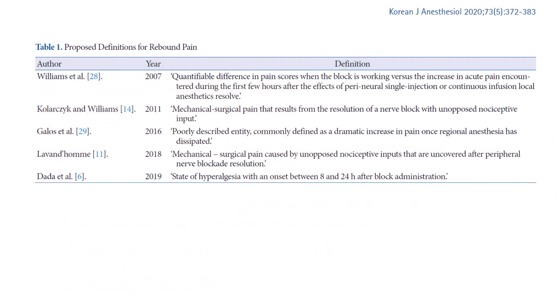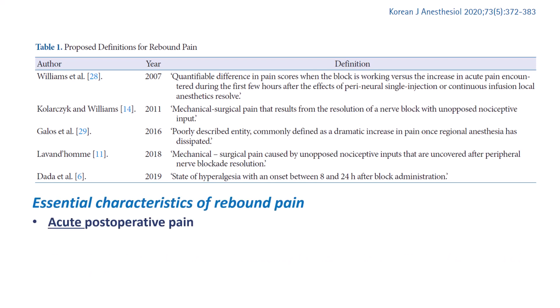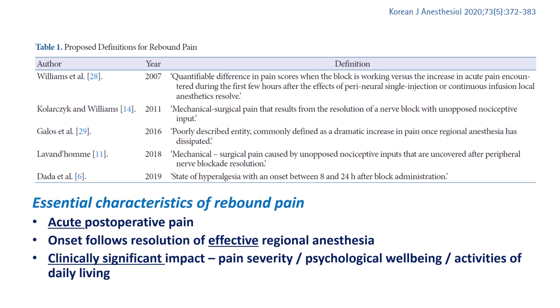There are different definitions that have been proposed in the literature, but I do think that the simplest and most practical one is this functional definition which we proposed in our review article from 2020, which is that rebound pain is severe postoperative pain that emerges with the resolution of an effective nerve block — that is, one that was until then providing excellent analgesia.